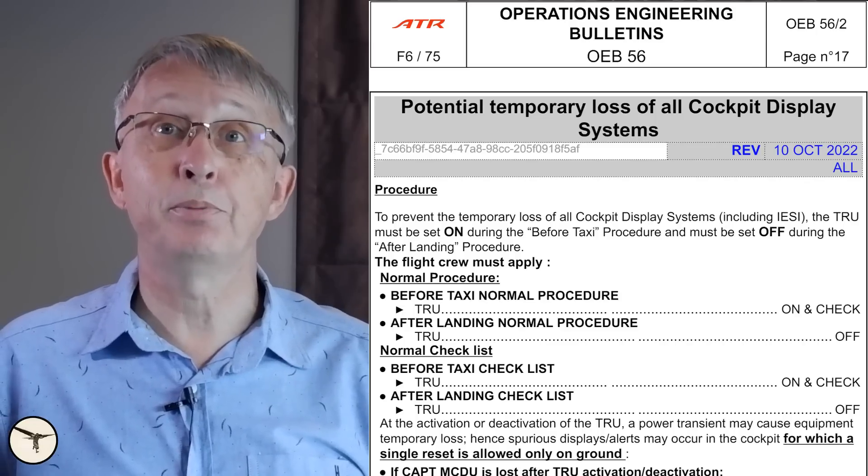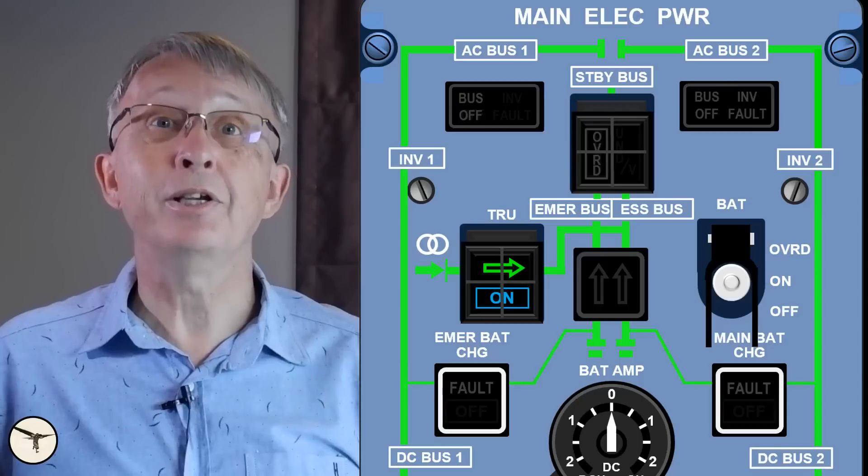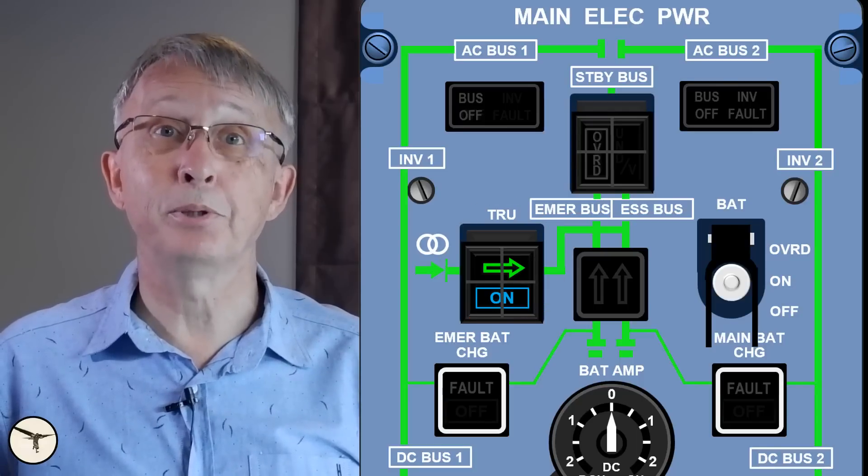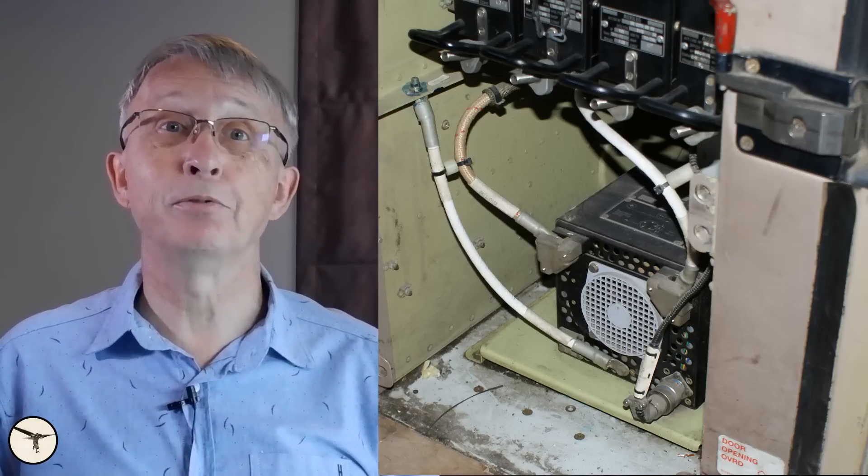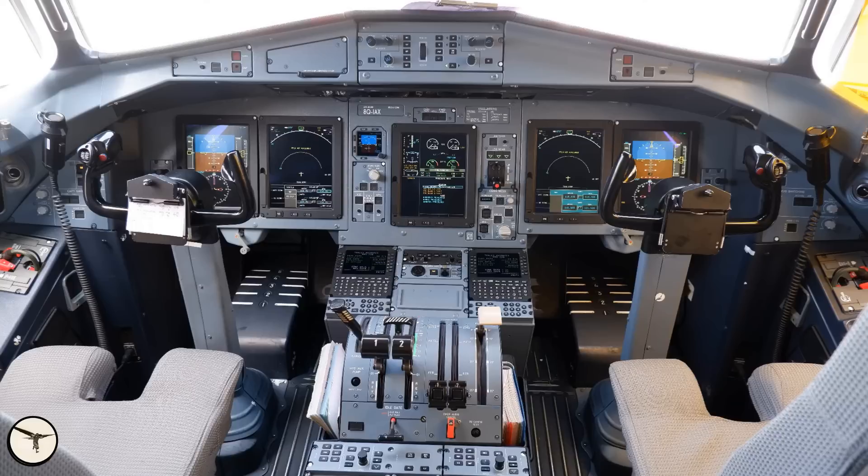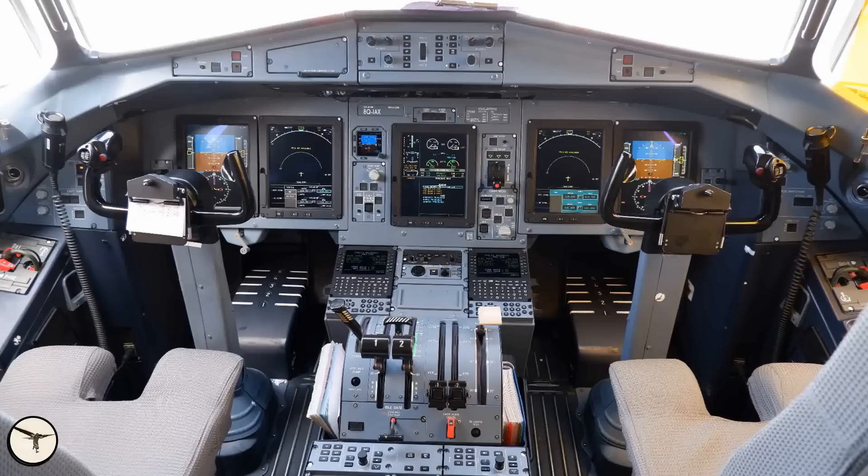The TRU is designed to provide backup power to the electrical buses that otherwise would have been powered by the batteries, in case both DC generators have failed. But in 2020, there were two incidents where all display units were lost in flight.